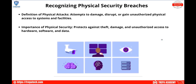We also want to recognize physical security breaches — attempts to damage, disrupt, or gain unauthorized physical access to systems and facilities. We want a defense-in-depth approach in the physical realm as well: fences, biometric scanners, and CCTV systems. Physical security protects against theft, damage, and unauthorized access to our critical systems.